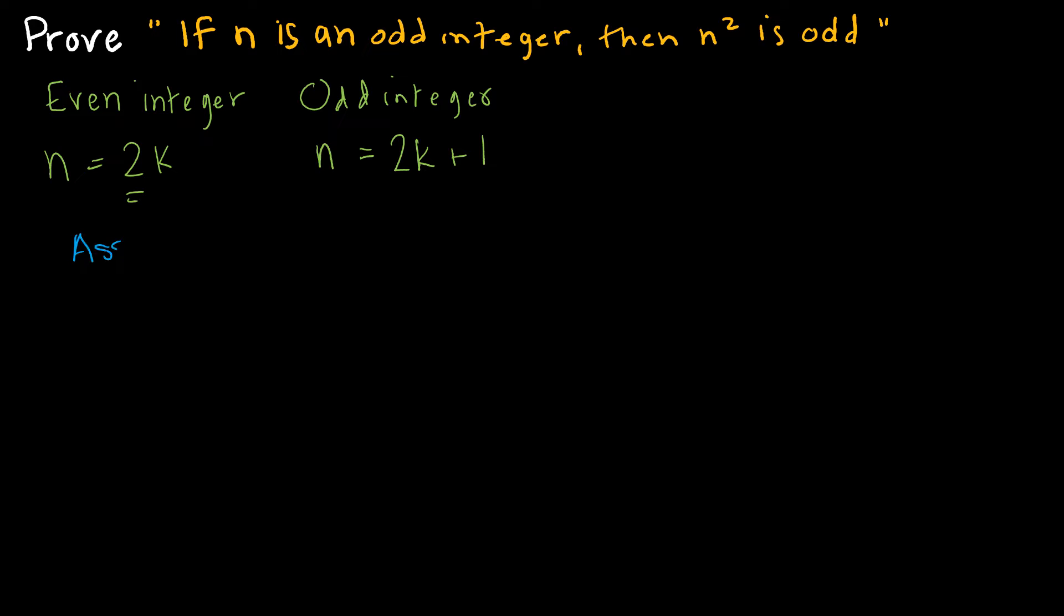So I'm going to say, assume n is an odd integer. So again, in a direct proof, we assume that this is true, and then we go about proving this is true. We're trying to prove n squared is odd. So if I assume that n is an odd integer, then n equals 2k plus 1 for some integer k.